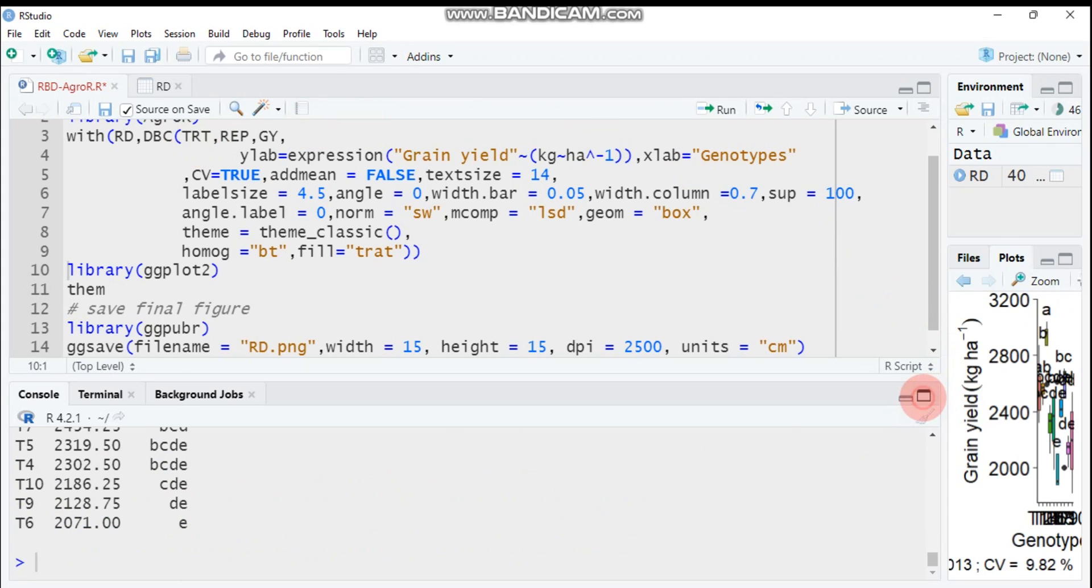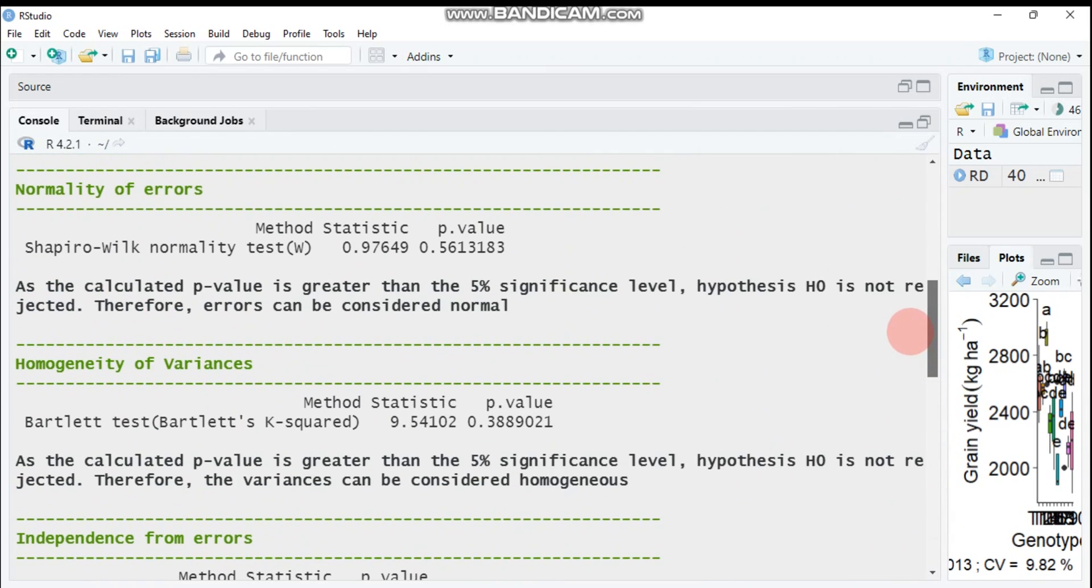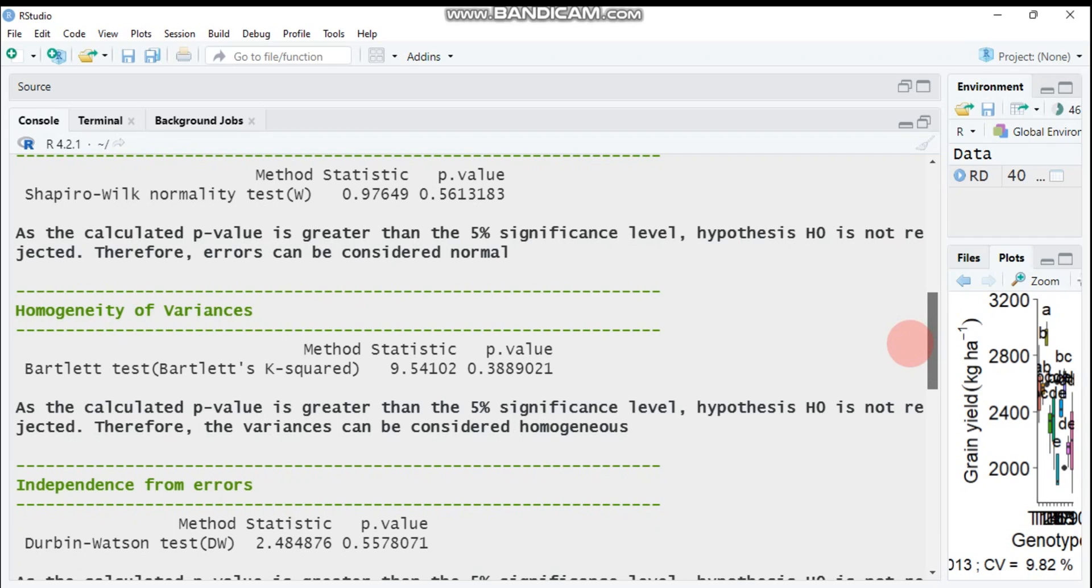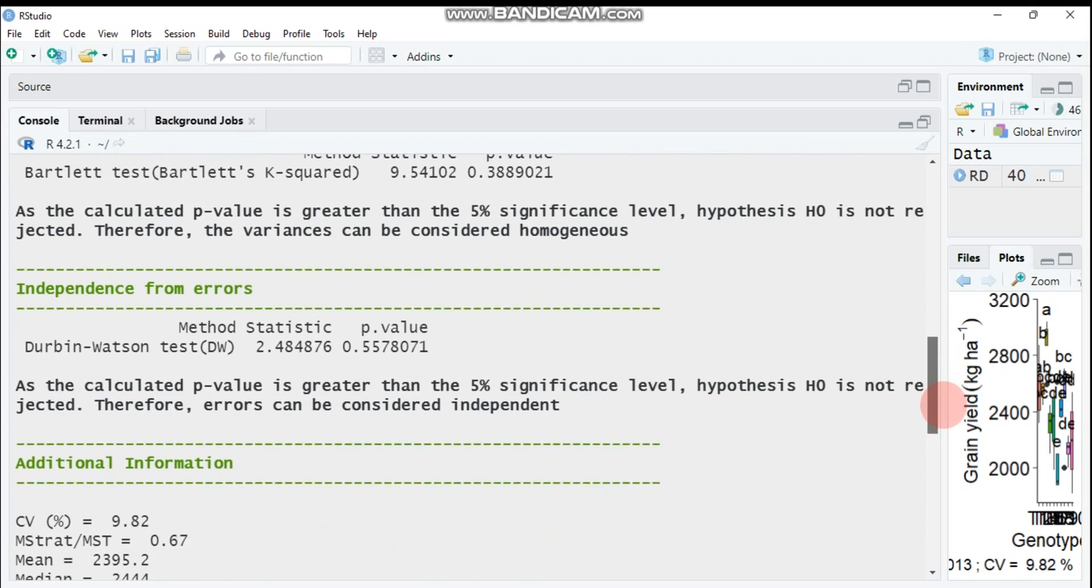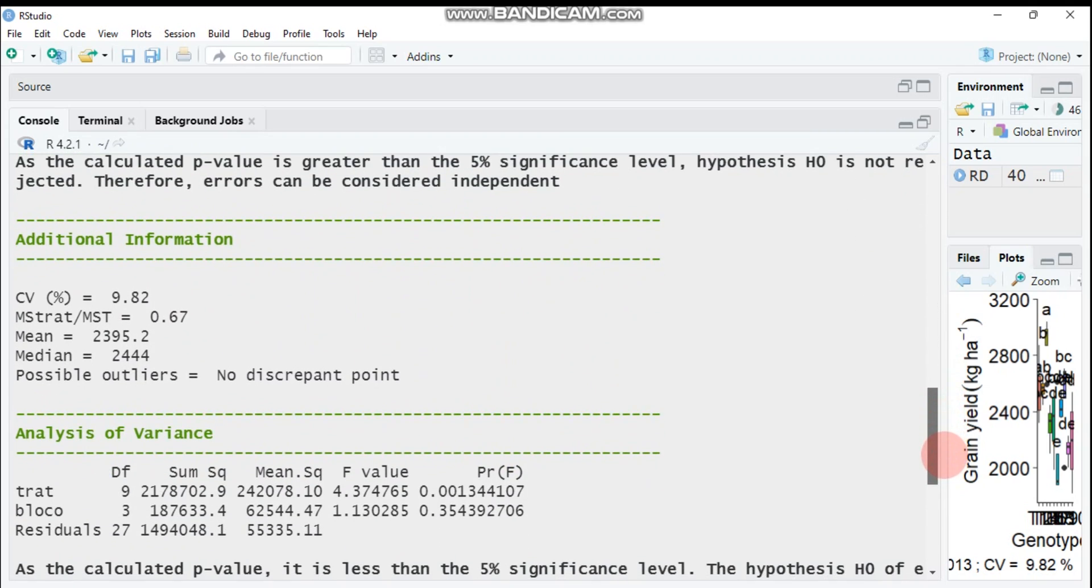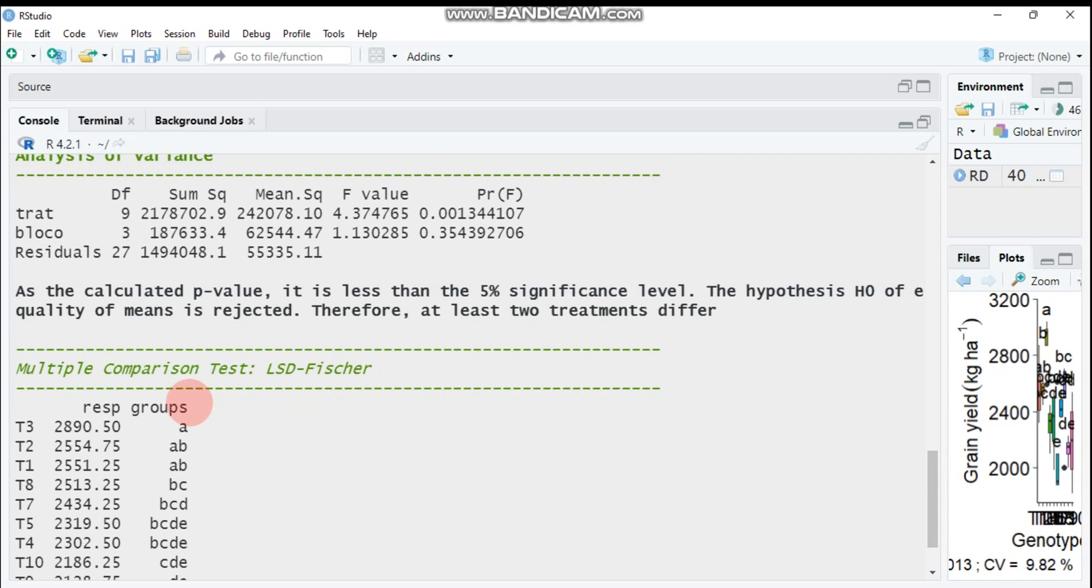All things are similar to the previous analysis, that means CRD. It will give you the normality, homogeneity of variance, independence from the error, again it will give you detailed information about the design, the mean, CV, median, and outliers, again variance, and also the multiple comparison.